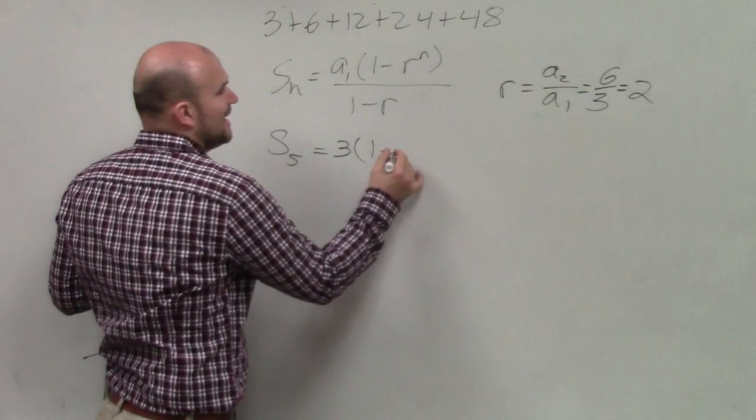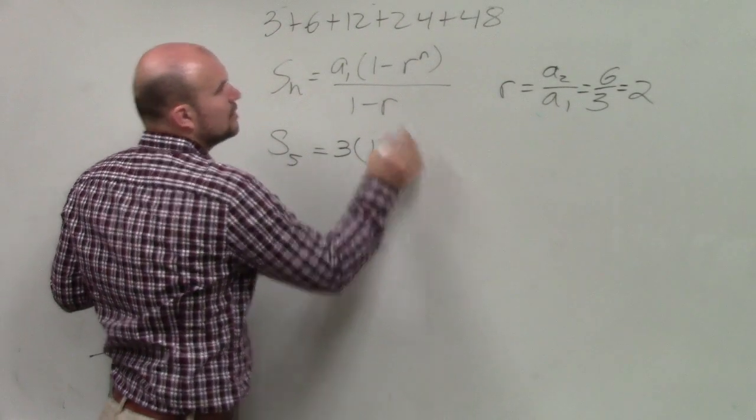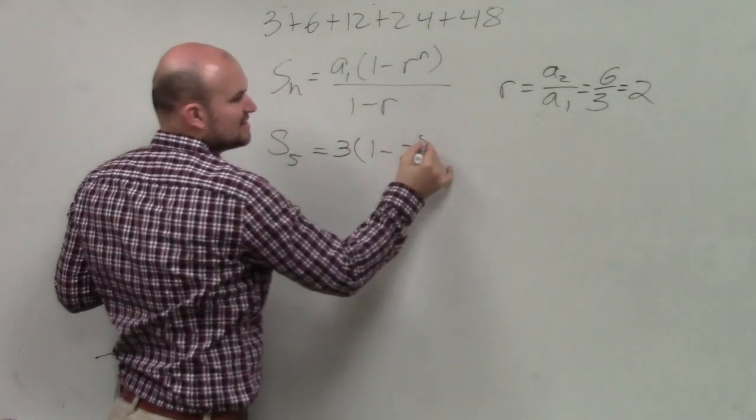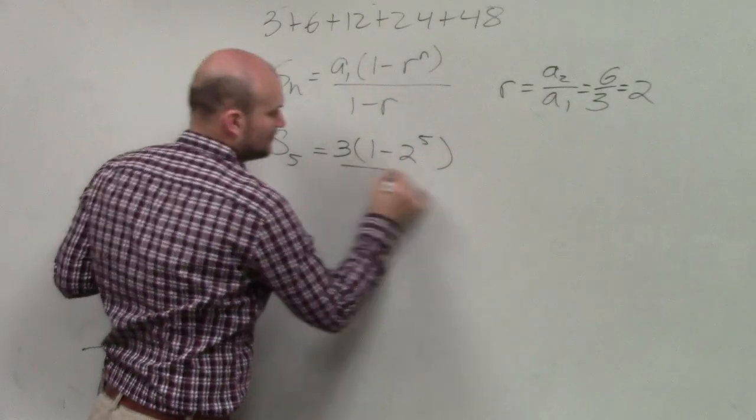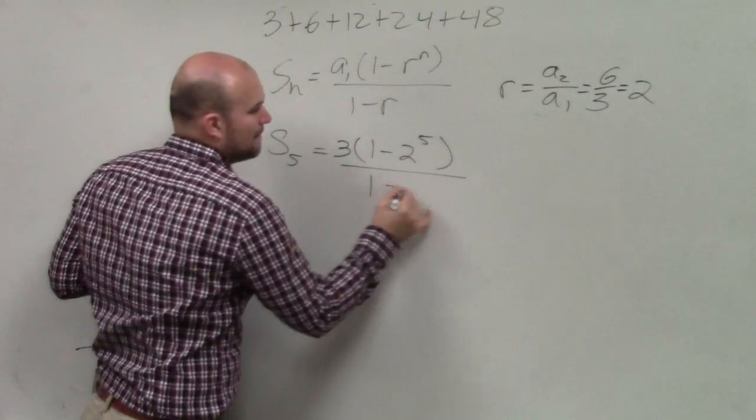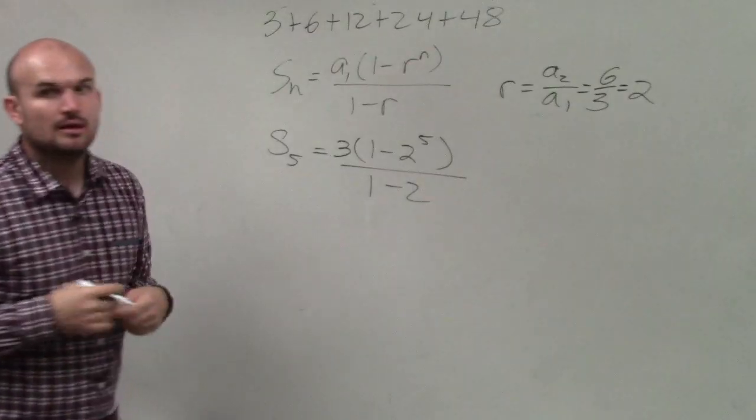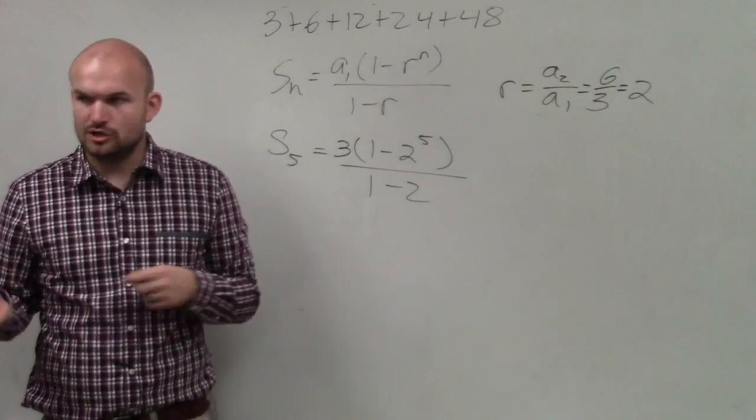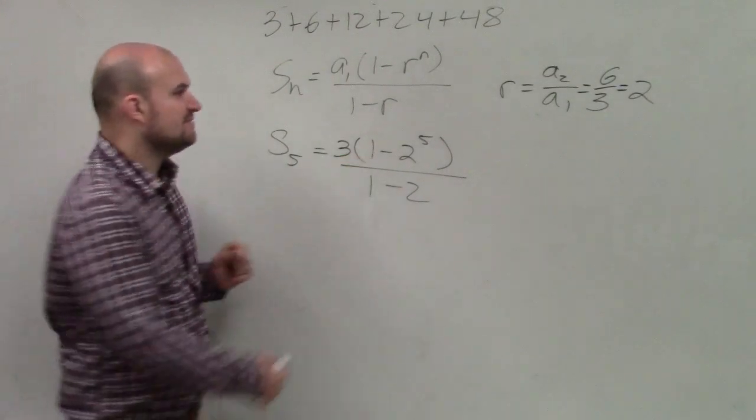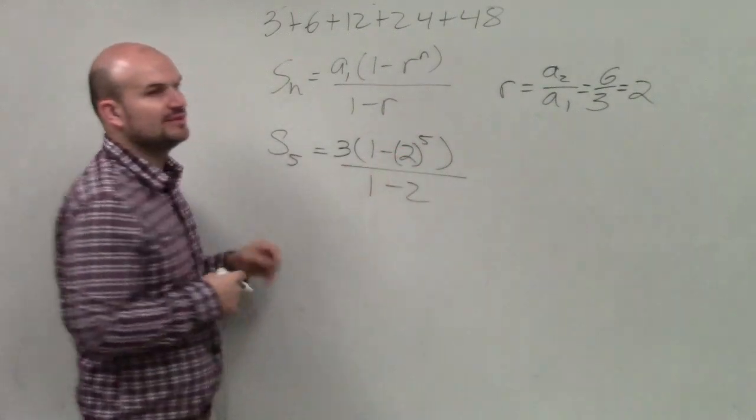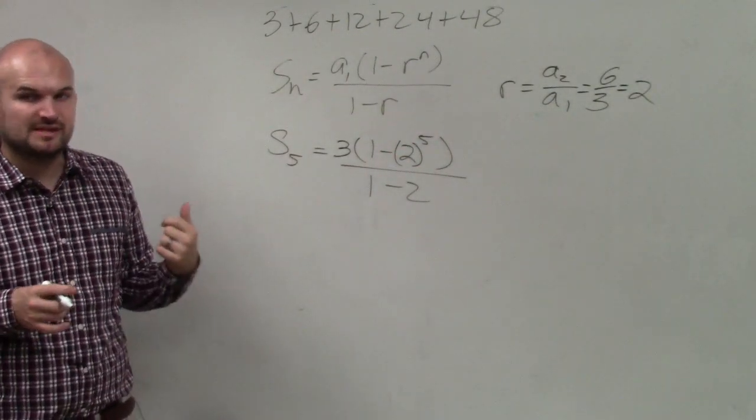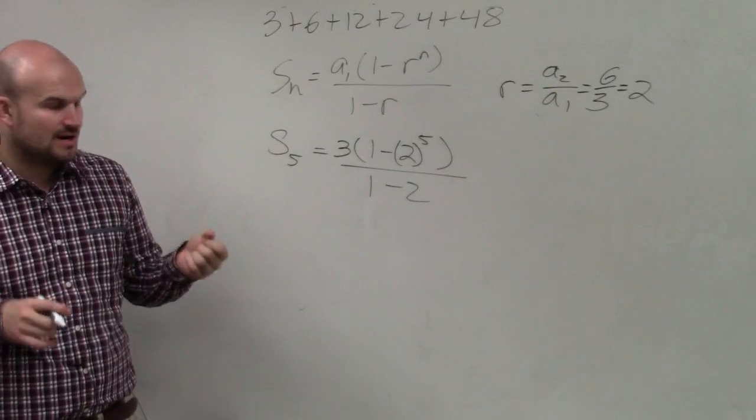So I have 1 minus 2 raised to the nth power, which is 5, divided by 1 minus 2. Now, let's go through some of our work. First of all, make sure that you leave this. You think about that as a positive 2 raised to the fifth power. It's not a negative 2 raised to the fifth power.